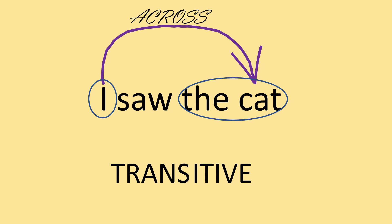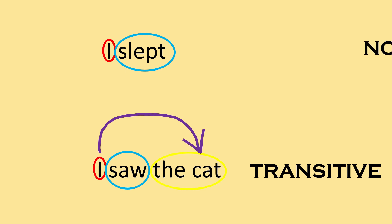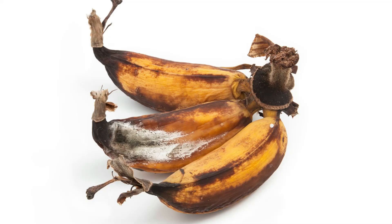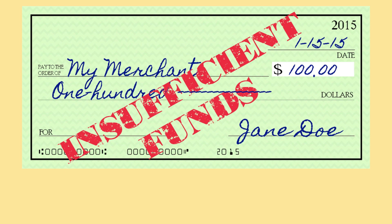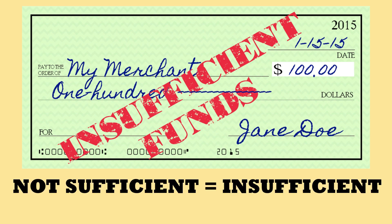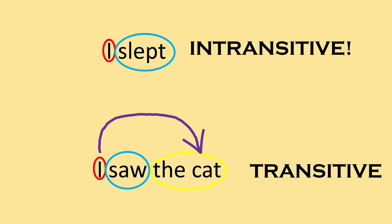And therefore, what's the opposite? In a sentence like 'I slept,' since 'I saw the cat' is transitive, what is 'I slept'? Well, pretty easy — it's not transitive. If a person is not decent, he or she is indecent. If the food is not edible, it's inedible. If you don't have enough money, it's insufficient. So, something that is not transitive is intransitive. A transitive sentence always has a verb and two things on either side — someone doing something and something receiving the action. The intransitive only has someone doing something and the action that is done.